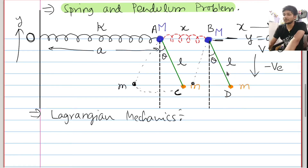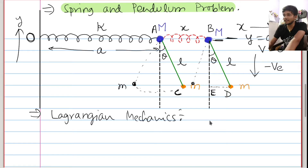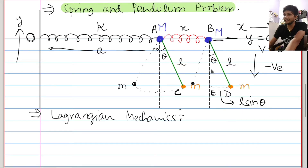अब problem को थोड़ा और simplify कर लेते हैं। यहां पर हमने B, C, D नाम दे दिए। जो ED distance है, this will be L sin theta, and BE will be L cos theta.